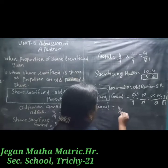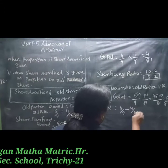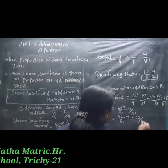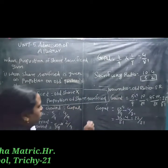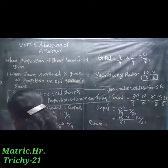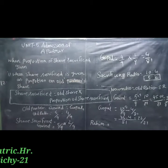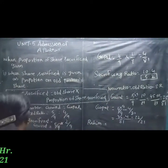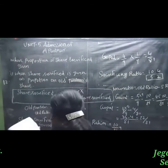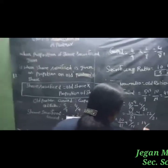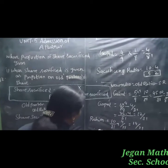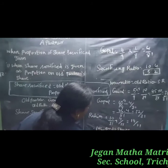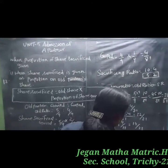For new partner Rahim: Govind's sacrifice 10/81 plus Gopal's sacrifice 4/81 equals 14/81. Therefore, the new profit sharing ratio equals 35 : 32 : 14.